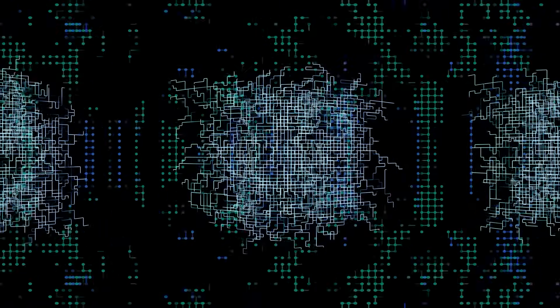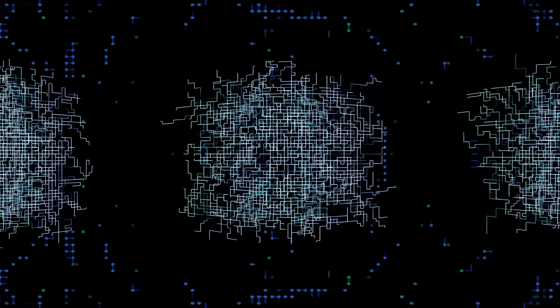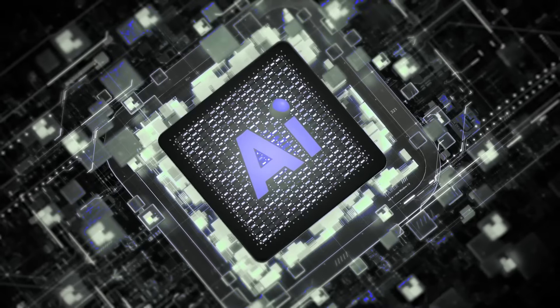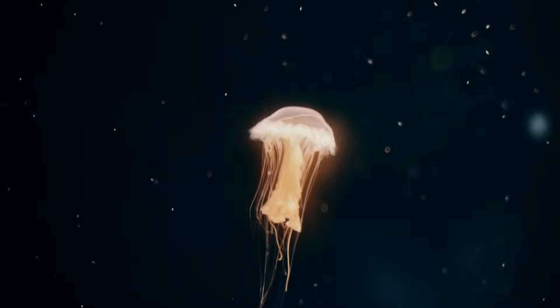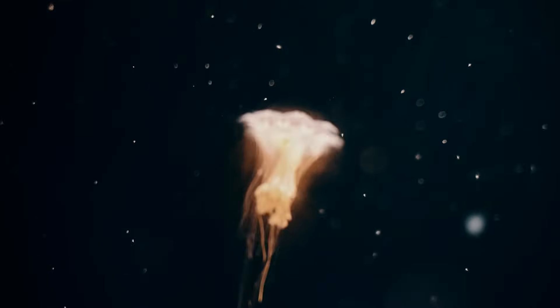At first, analysts believed it might be compression artifacts or background noise. But then a mathematician noticed something horrifying. The shapes mirrored structures found in deep-sea organisms on Earth. Particularly cephalopod nervous systems and certain coral growth patterns.